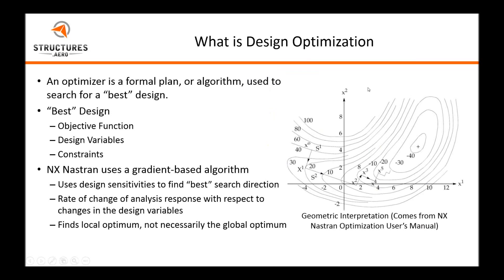So what is design optimization? Fundamentally, an optimizer is a formal plan or algorithm used to search for a best design. What constitutes a best design really depends on how the user defines the optimization problem. Typical parameters that must be defined are an objective function, design variables, and design constraints.